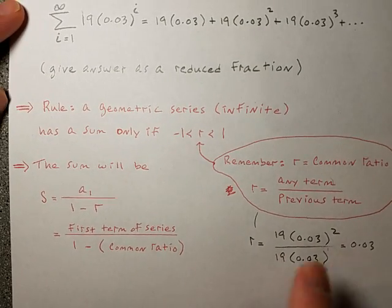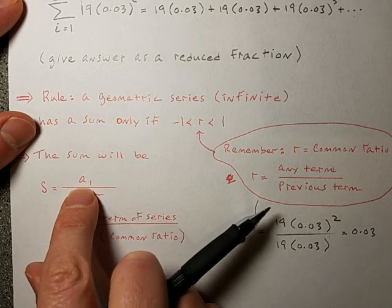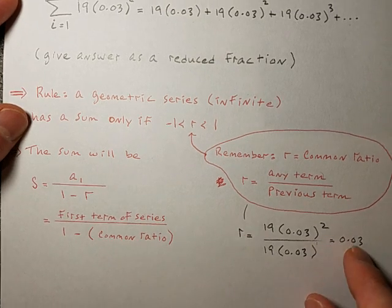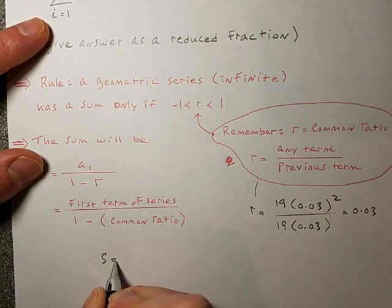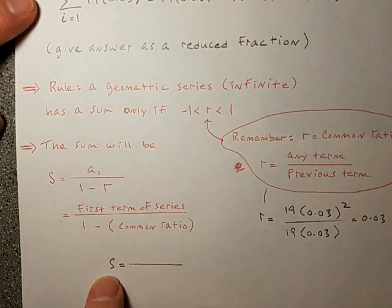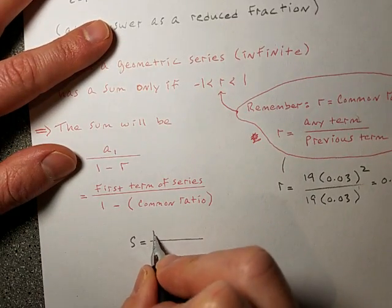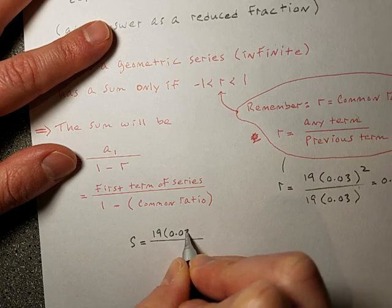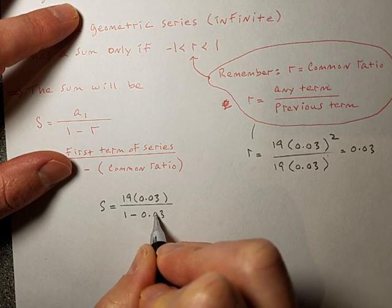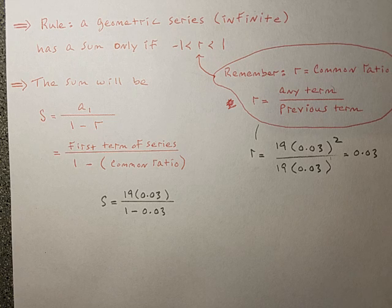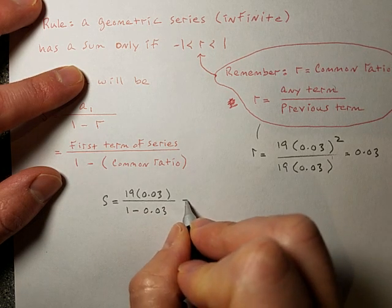So a geometric series that's infinite has a sum only if r is between negative 1 and 1. In this case it is, so the sum will be a₁ over (1 minus r), which means the first term of the series divided by 1 minus the common ratio. So S equals a₁ — the first term, which is 19 times 0.03 — over 1 minus r, which is 0.03.